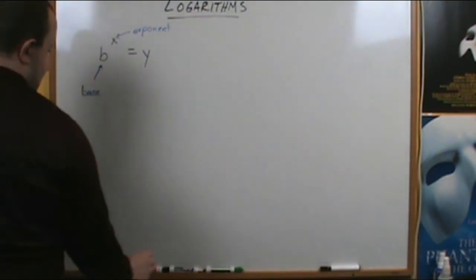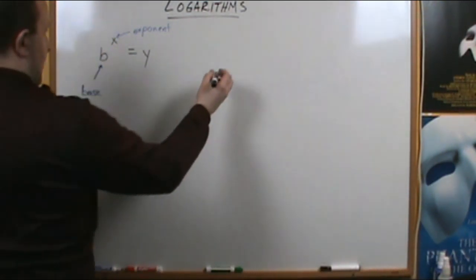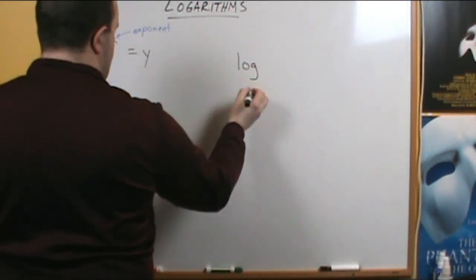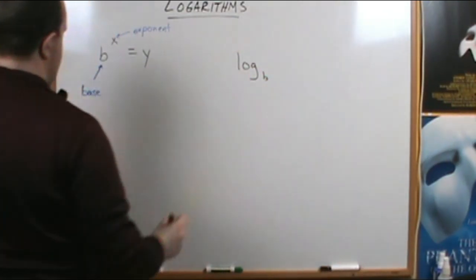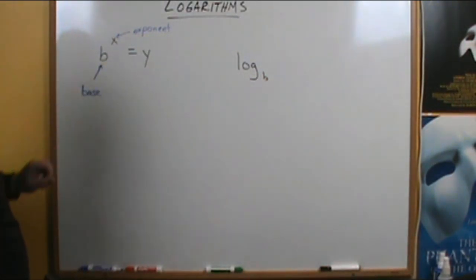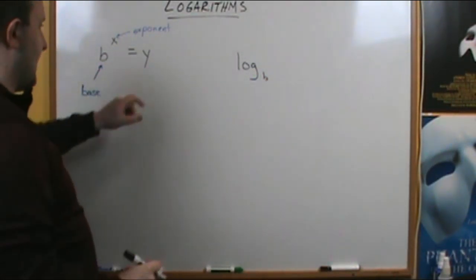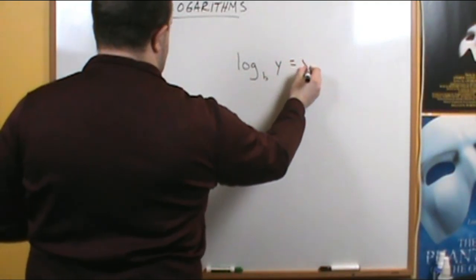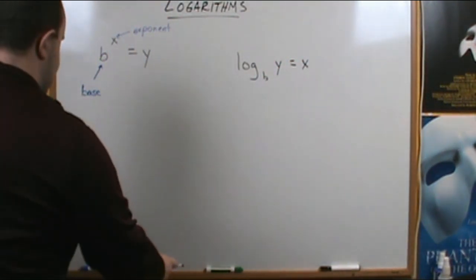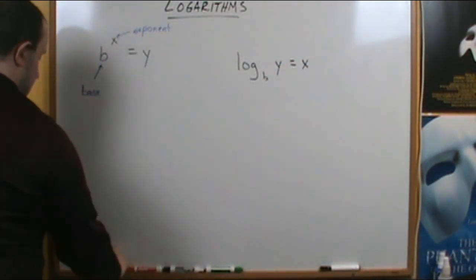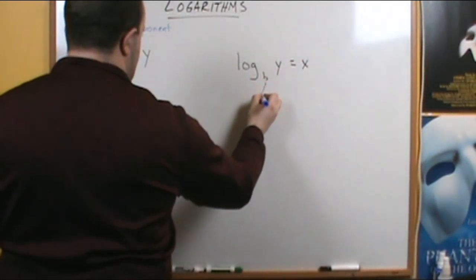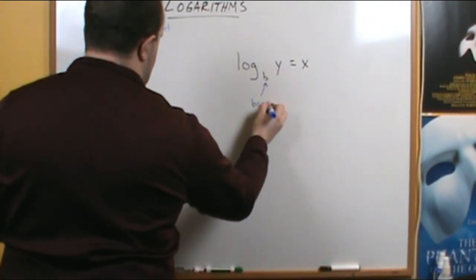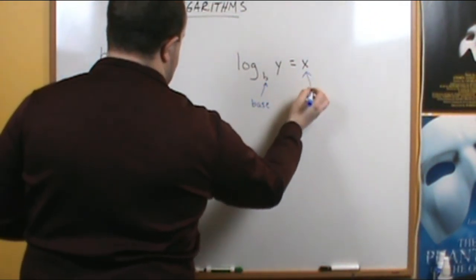In logarithmic form, we say the logarithm with a base b of y equals x, the value of the exponent. So our base here is b, and our exponent is x.